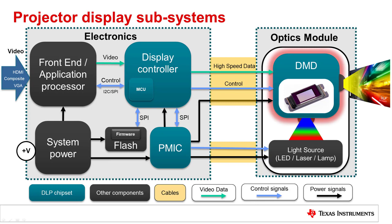The DMD is a micro opto-electromechanical system device and is the heart of the DLP chipset. It processes video pixel subframe data received from the controller on its proprietary high-speed interface, projects the pixel-level video data by reflecting the light onto its mirrors, and provides a proprietary low-speed control interface to the display controller.